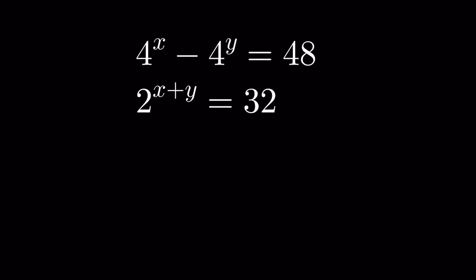4 raised to the power x minus 4 raised to the power y is equal to 48, and 2 raised to the power x plus y is equal to 32. We have to find the value of x and y.